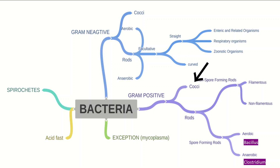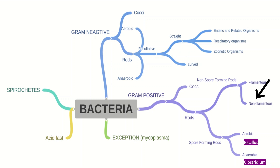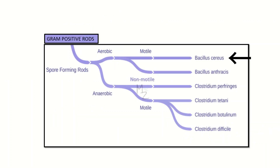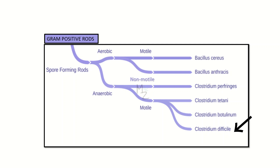Gram positive bacteria are further classified into cocci and rods. Rods are classified into non-spore forming and spore forming rods. Spore forming rods are further classified into aerobic — for example Bacillus — and anaerobic — for example Clostridium. These are further classified into motile and non-motile. Bacillus cereus is an aerobic motile rod, while Bacillus anthracis is non-motile. Clostridium perfringens is non-motile anaerobic, while Clostridium tetani, Clostridium botulinum, and Clostridium difficile are motile anaerobic rods.